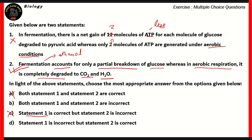Since statement 1 is wrong and statement 2 is correct, the right option turns out to be option D, which says statement 1 is incorrect but statement 2 is correct. Option B is incorrect because it says that both statements are incorrect, which is not true — statement 2 is actually true. So for this first question, the right answer is option D.